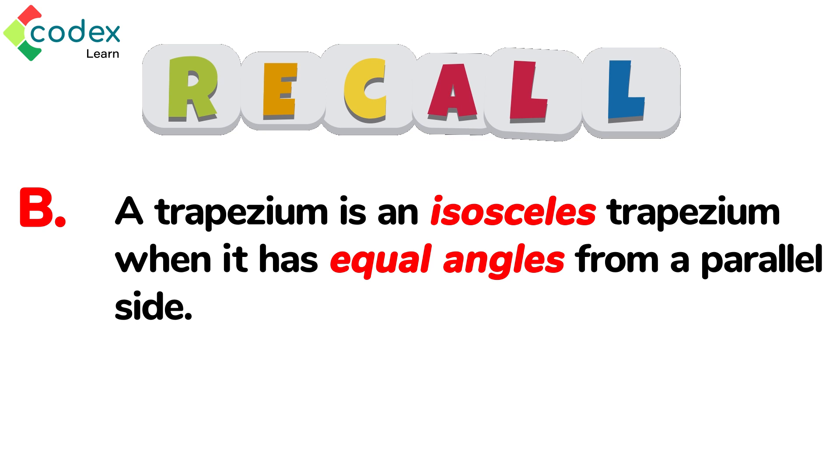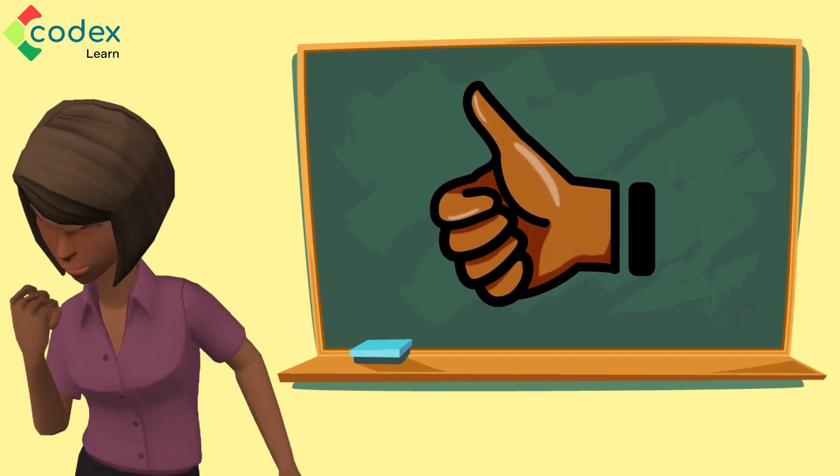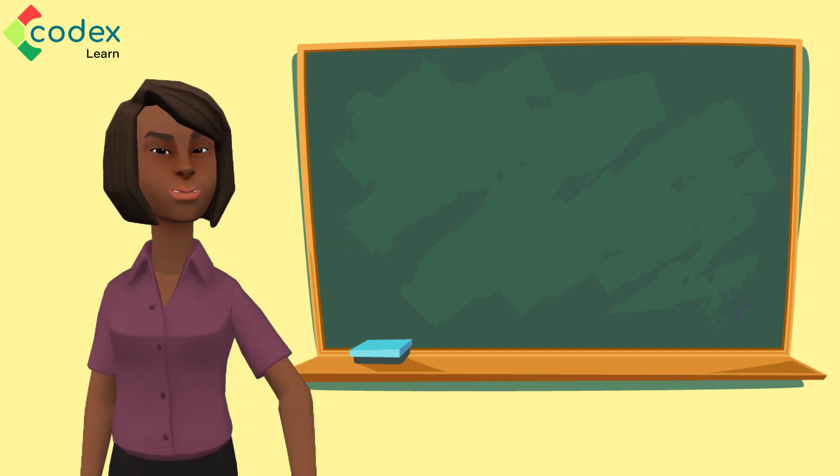C: The area of a trapezium is the number of square units it takes to completely fill it. Amazing! We've learned something new today and it was about the area of a trapezium.